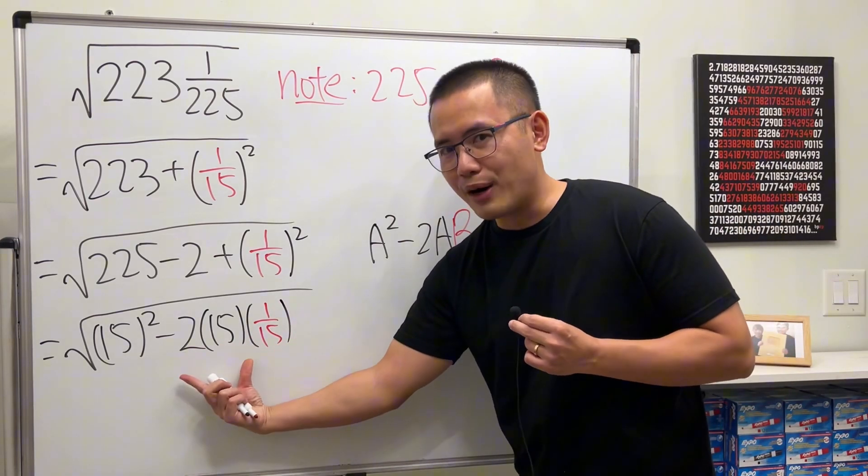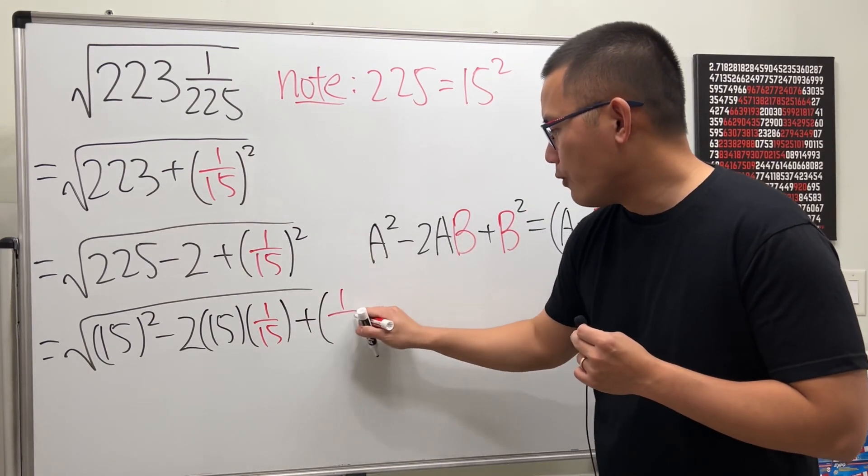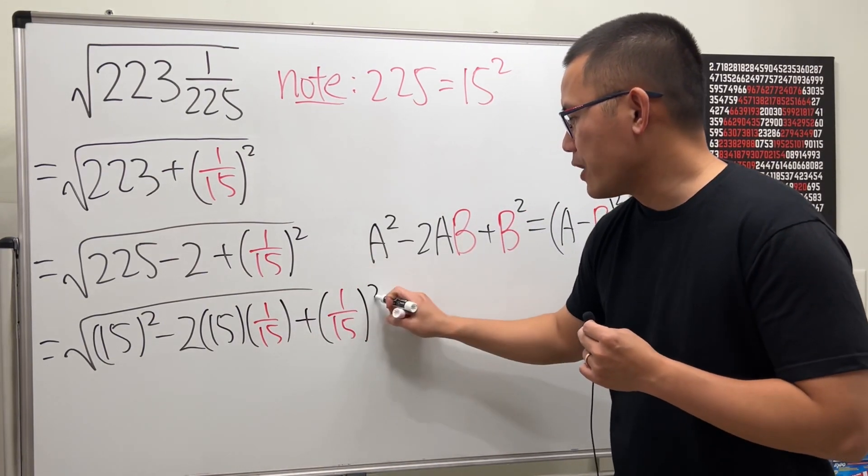So, this part is still minus 2. And then, at the end, we still have that plus 1 over 15 squared, like this.